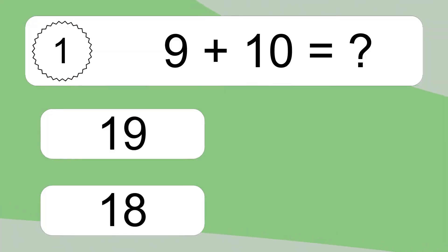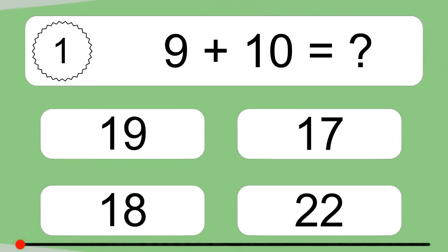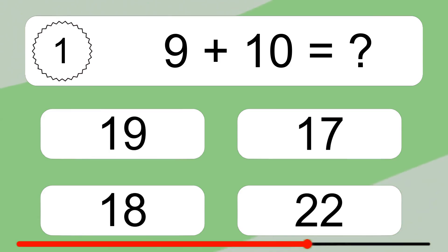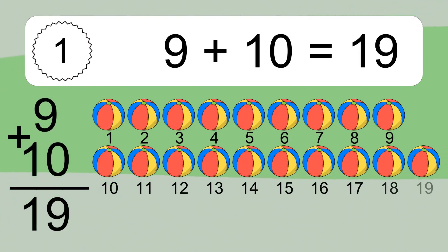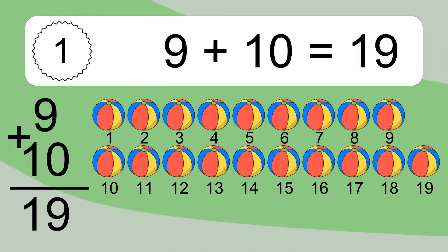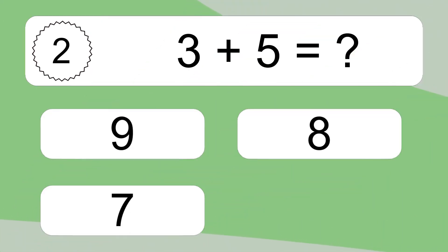9 plus 10 equals what? 9 plus 10 equals 19. Let's count it: 1, 2, 3, 4, 5, 6, 7, 8, 9, 10, 11, 12, 13, 14, 15, 16, 17, 18, 19.